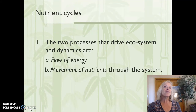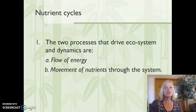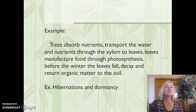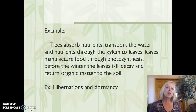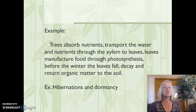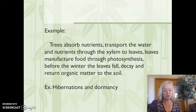Nutrient cycles are the processes that drive the dynamics — the flow of energy and movement of nutrients through the system. For example, trees absorb nutrients and transport water and nutrients through the xylem to the leaves, where they manufacture food through photosynthesis. Before winter, the leaves fall, decay, and return organic matter to the soil. This is the flow of energy throughout a tree.